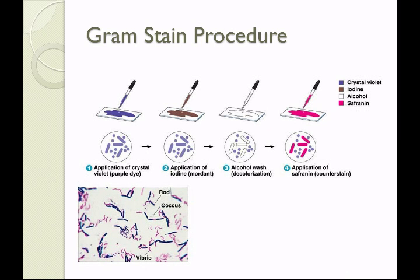The Gram stain procedure involves four distinct steps. After preparing and heat-fixing the smear, we apply crystal violet, which is the primary basic dye. Any organism that can accept a basic dye will stain purple at this step — if we stopped here, we would essentially have a simple stain. Instead, we rinse and apply iodine, which is the mordant. Like mortar or cement, iodine helps cement the crystal violet into the peptidoglycan.